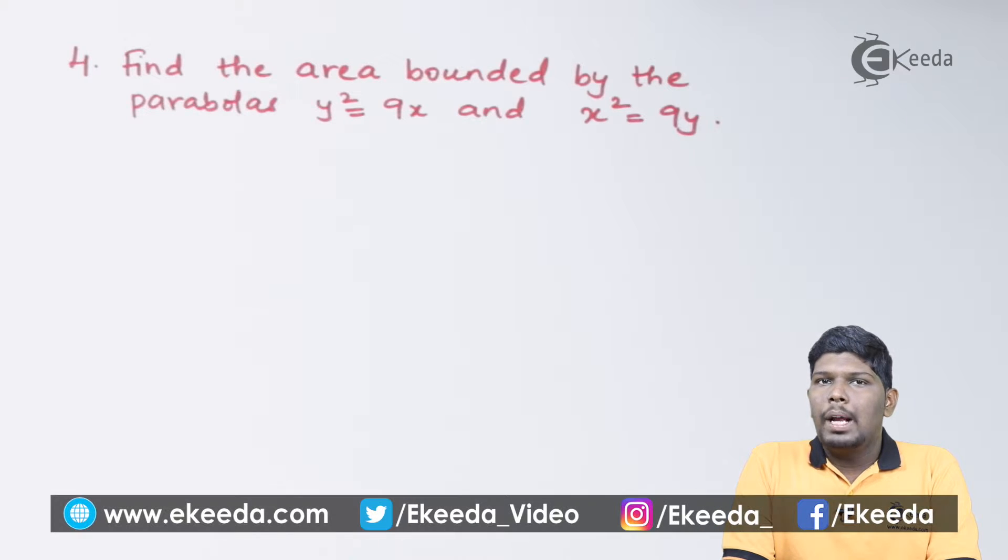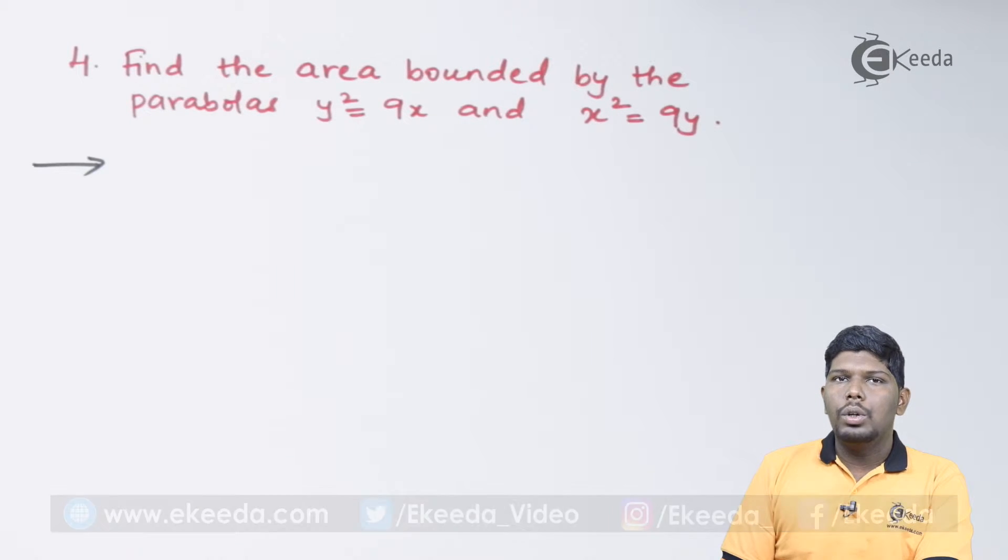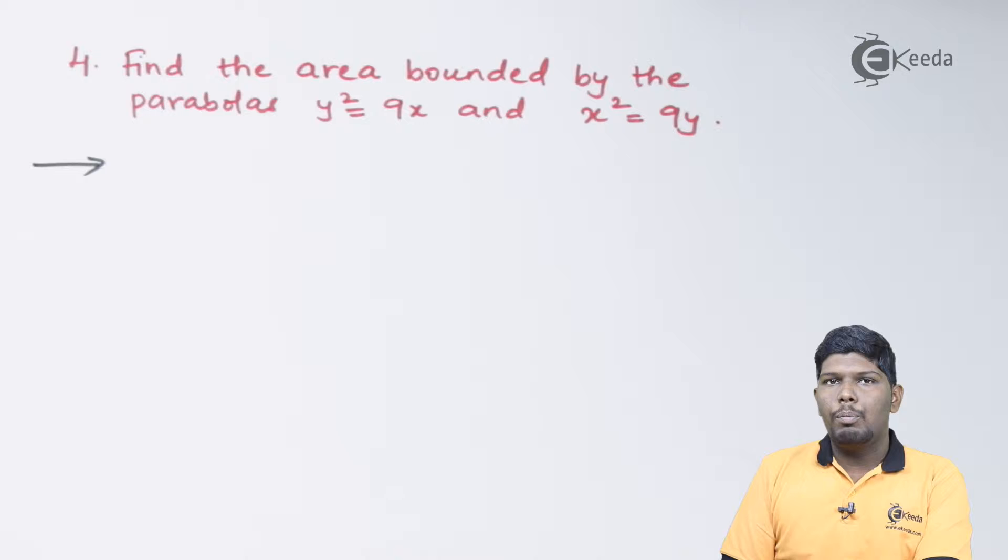Find the area bounded by the parabolas y² equals 9x and x² equals 9y. Before drawing these two parabolas, the first step that we can do is find the point of intersection of both these parabolas.